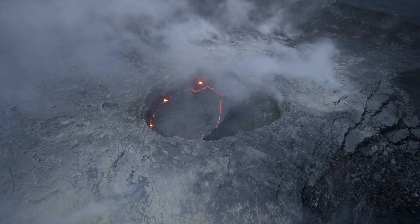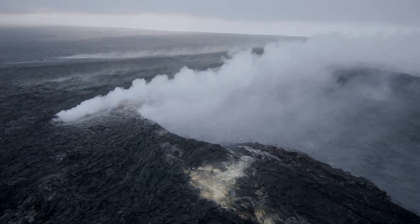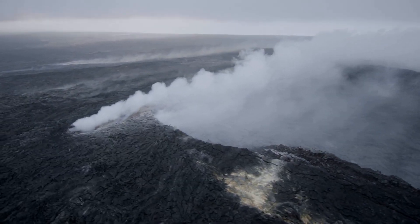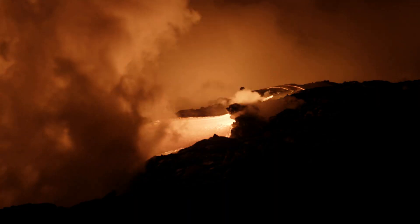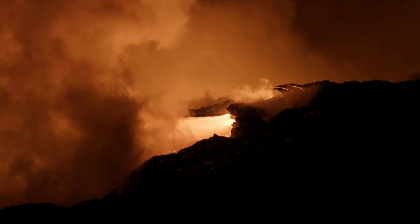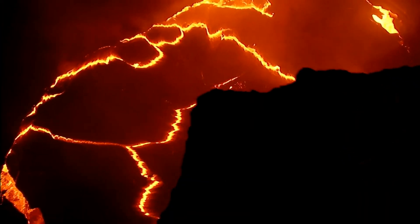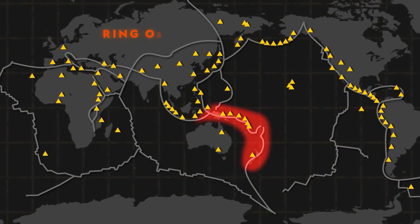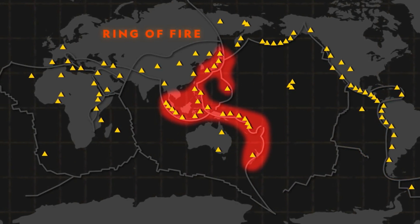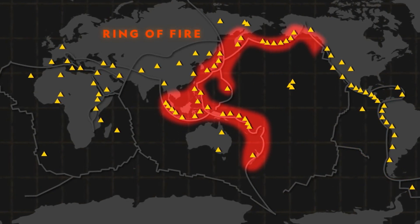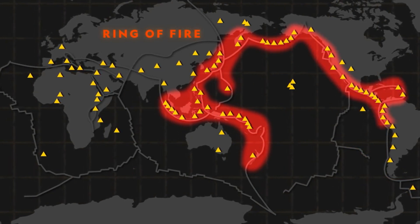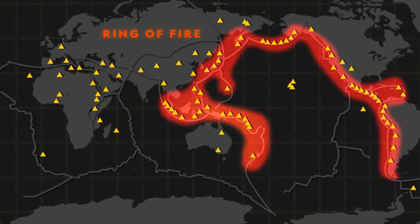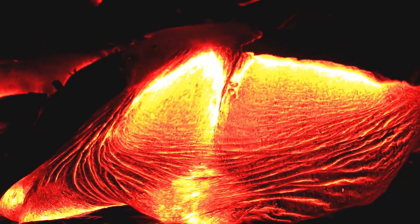a mid-oceanic ridge such as the Mid-Atlantic Ridge has volcanoes caused by divergent tectonic plates, whereas the Pacific Ring of Fire has volcanoes caused by convergent tectonic plates.